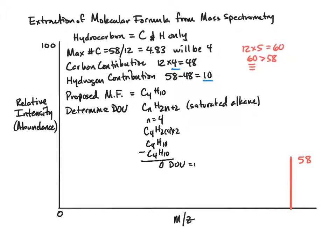What does that mean? There are no pi bonds or rings present in the molecule. So every carbon is fully saturated. That means all carbons are sp3 hybridized.